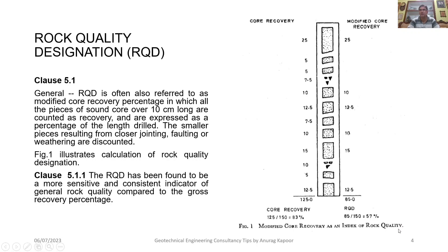Rock Quality Designation, Clause 5.1 general: RQD is often referred to as modified core recovery percentage, in which all pieces of sound core over 10 cm long are counted as recovery and expressed as a percentage of the length drilled. Smaller pieces resulting from closer jointing, faulting, or weathering are discounted. Figure 1 illustrates calculation of Rock Quality Designation. The RQD is calculated as: 25 + 10 + 12.5 + 10 + 15 + 12.5 = 85 cm out of 150 cm.